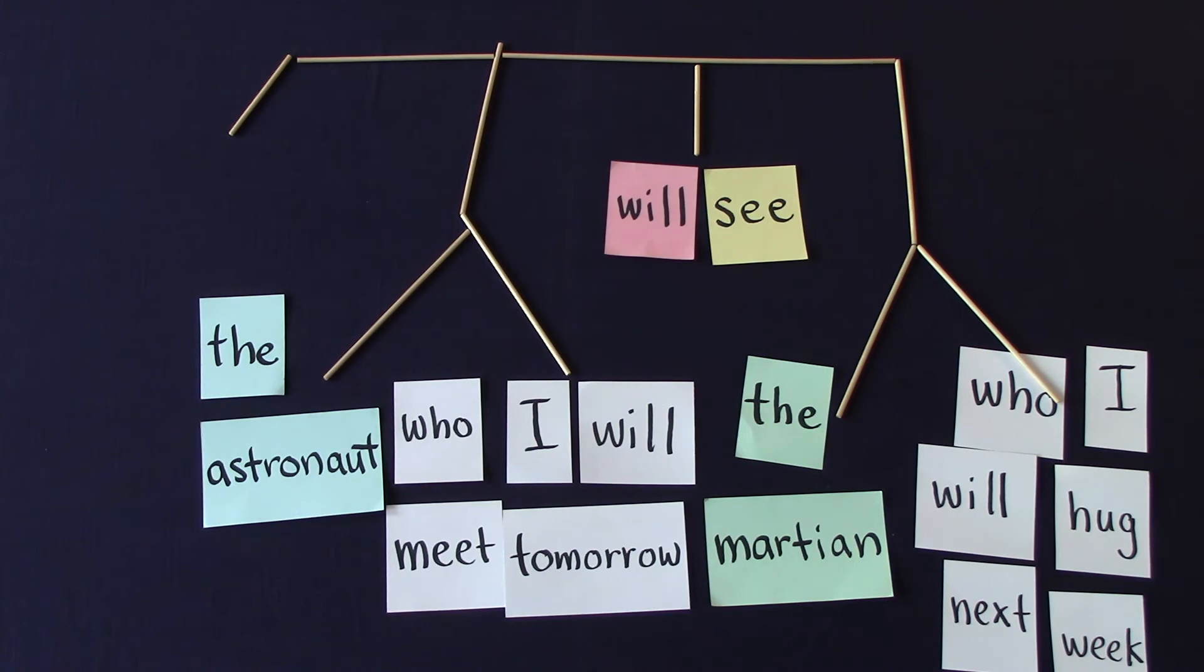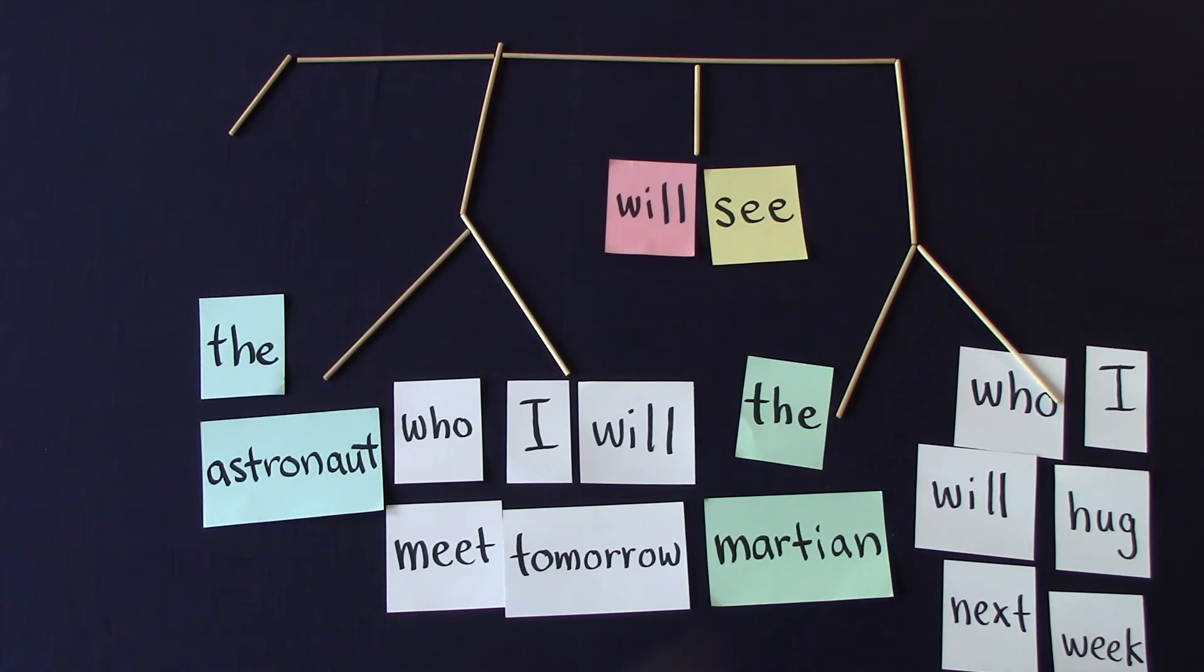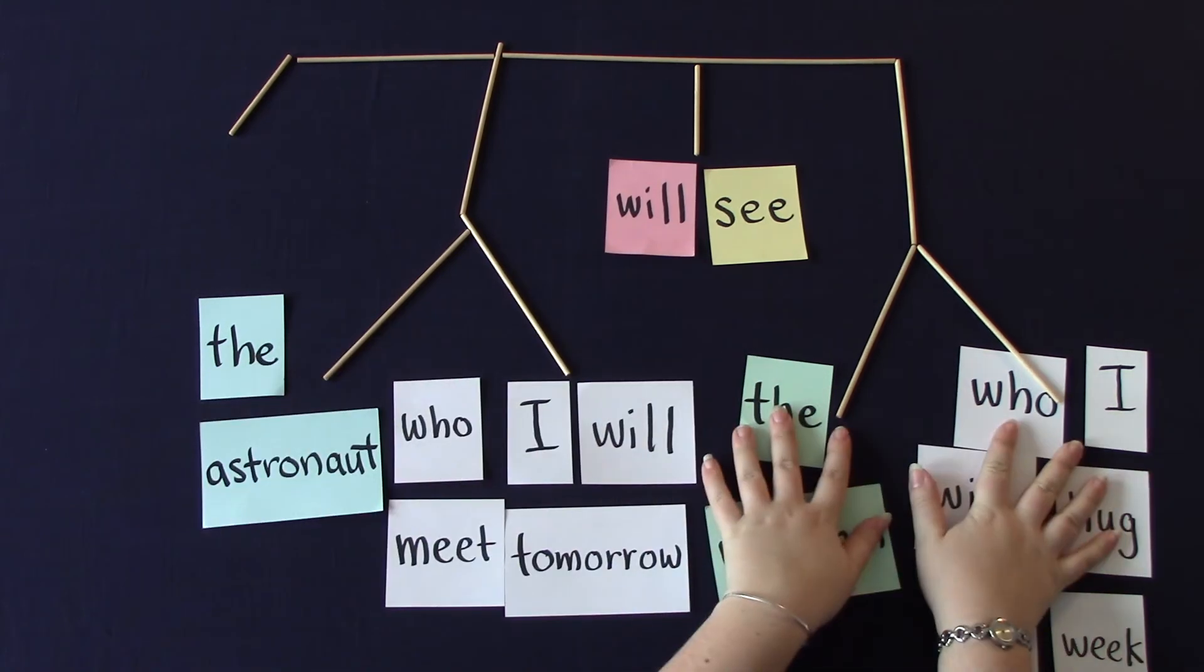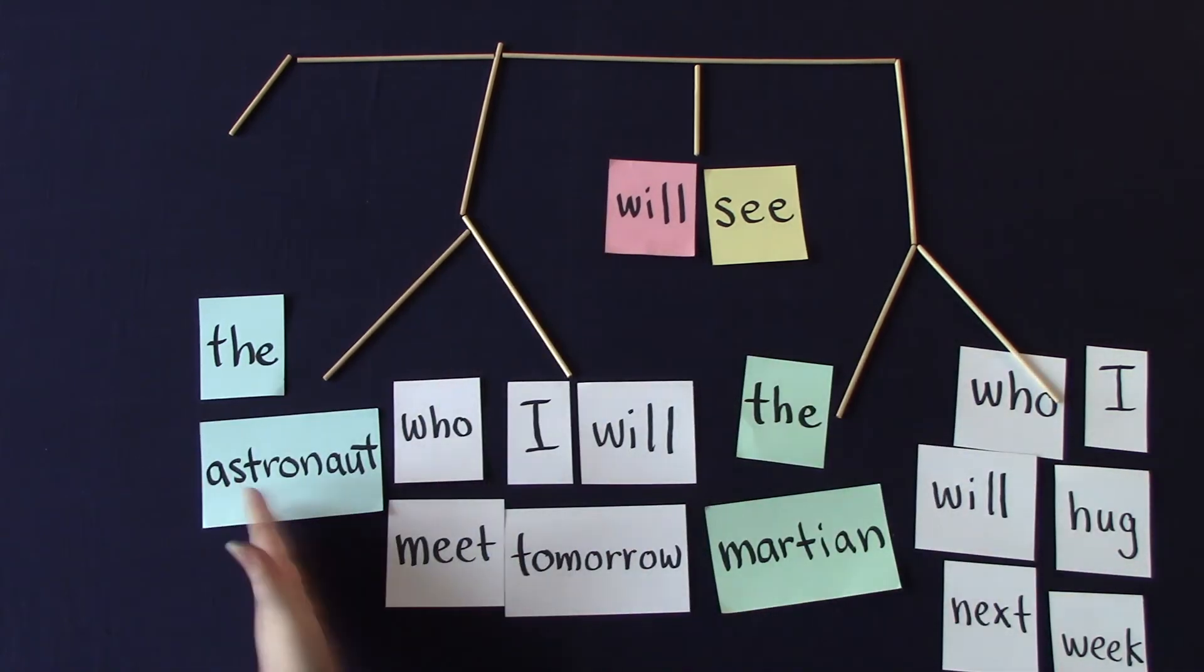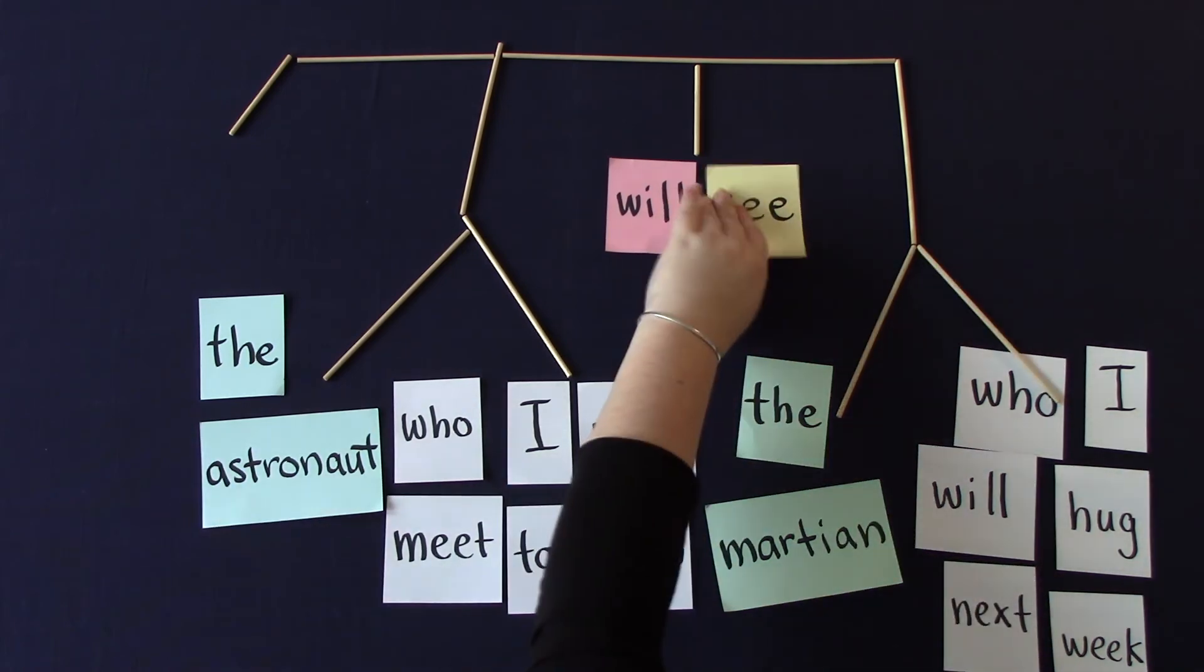What have we learned? Linear order is kind of important, because otherwise how would you know where to move the will to? But what's also really important is this relationship that the words have with each other in groups. And we can't just count the words to figure out what these relationships are.